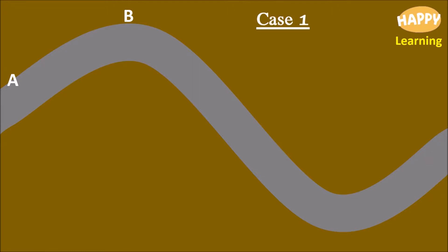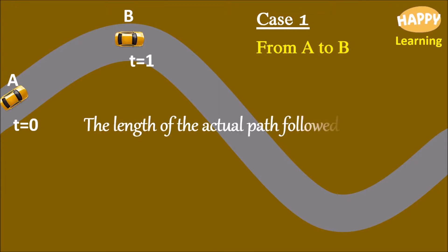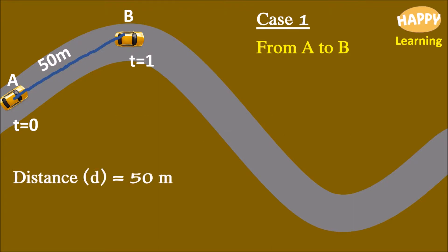Case 1. Journey from A to B. The length of the actual path followed by the body is called distance. Here, path between A and B is 50 meter. Therefore, distance D is equal to 50 meter. Time taken is equal to 1 second. Therefore, speed is equal to 50 meter per second.